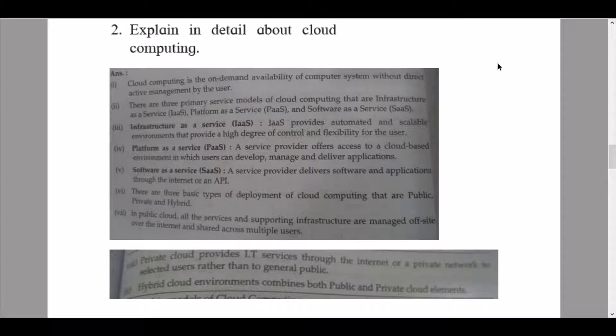Then we continue to the answers here. Cloud computing is the on-demand availability of computer system without direct active management by the user. There are three primary service models of cloud computing: Infrastructure as a Service (IaaS), Platform as a Service (PaaS), and Software as a Service (SaaS), as we discussed in part number two of emerging technologies. Infrastructure as a Service: IaaS provides automated and scalable environments that provide a high degree of control and flexibility for the user. Platform as a Service: a service provider offers access to a cloud-based environment in which users can develop, manage, and deliver applications.